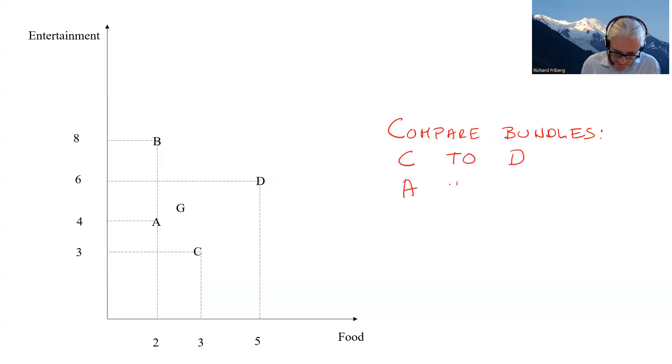What about A to C? Well, we're then trading off different things. Again, A has more entertainment but less food, whereas C has more food and less entertainment. So we need to say something about how we value those different things, which might depend on the person, which might depend on...